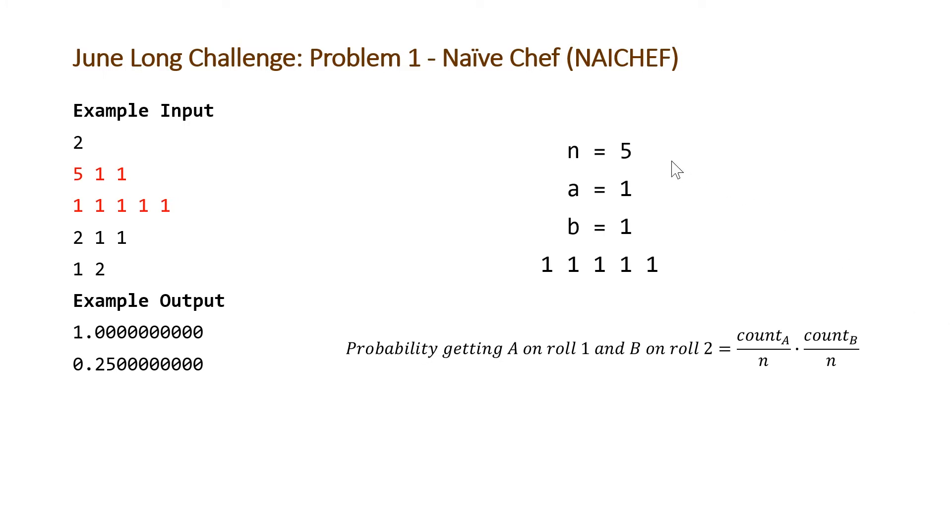So this is a pretty simple problem. It's basic probability. Taking a look at our first example, we have N equal to 5, A and B equal to 1, and then all of the faces are equal to 1. So the way we're going to solve this problem is just by keeping track of the number of A's and B's on our faces of our die.